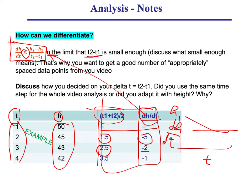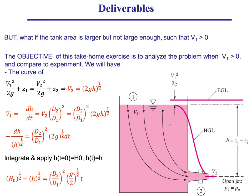Since both h and dh/dt share the same time base, you can plot them together. Discuss how you chose your time step — whether you used one second uniformly or varied the step between the beginning and end of the experiment — and explain why you made that choice.